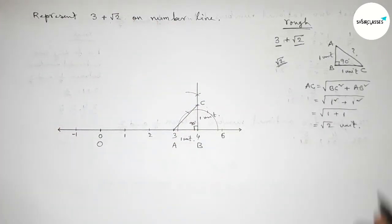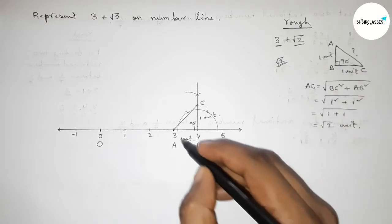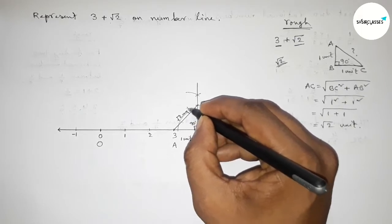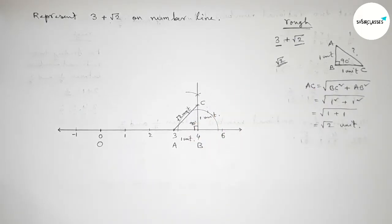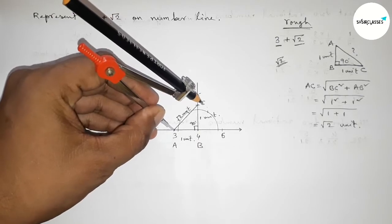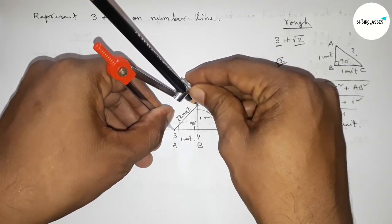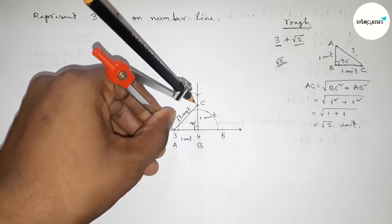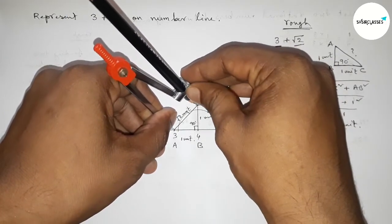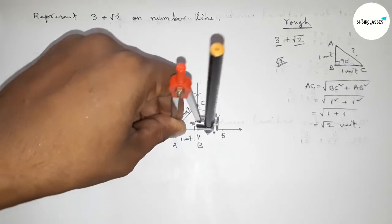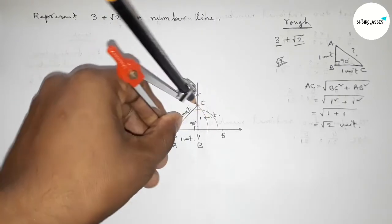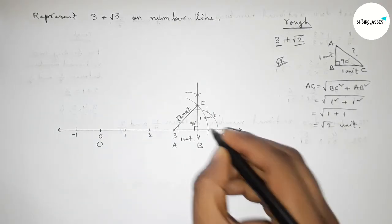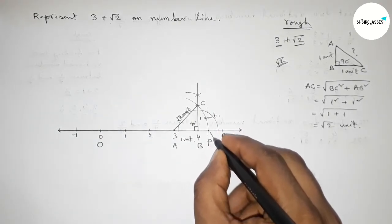From this we can say that AC is root 2 unit length. Now take AC equal to root 2 using the compass and draw an arc through point C which meets the number line at a point. Take point P here.